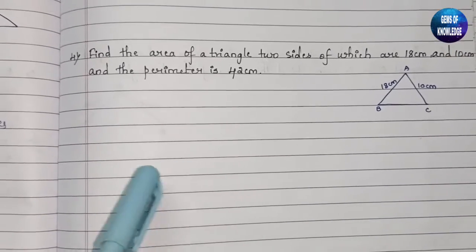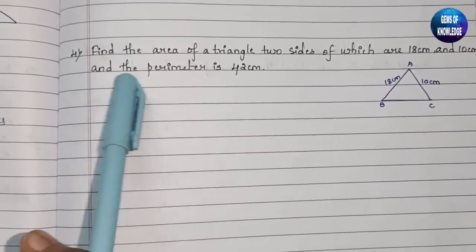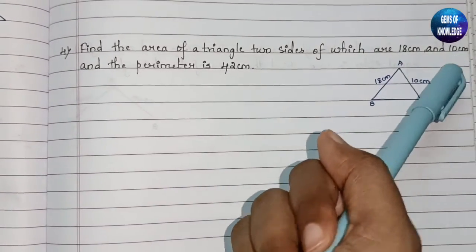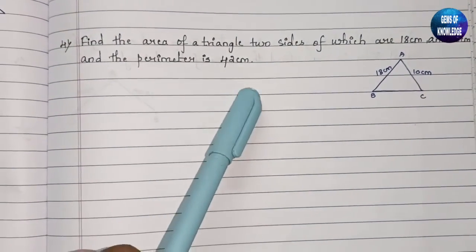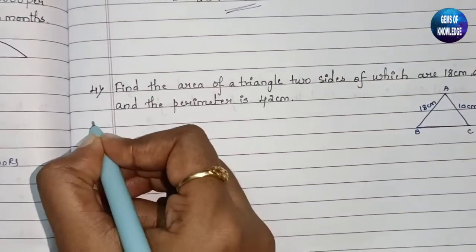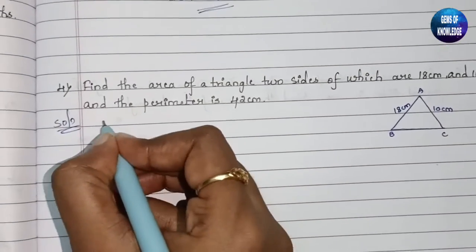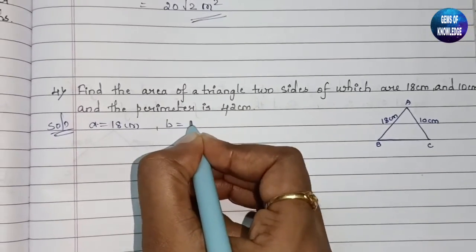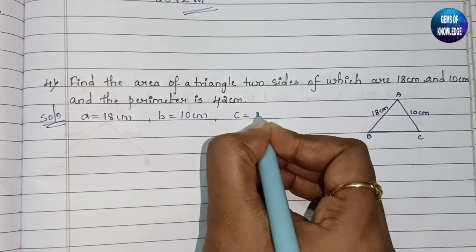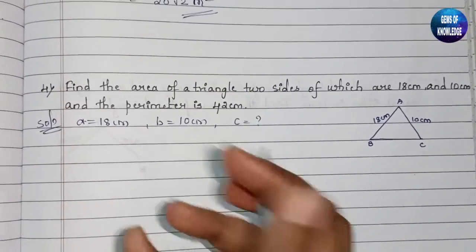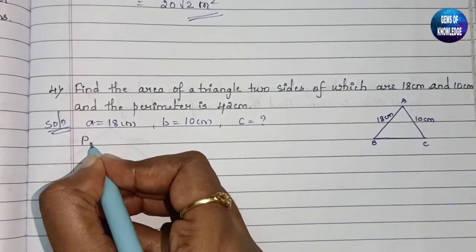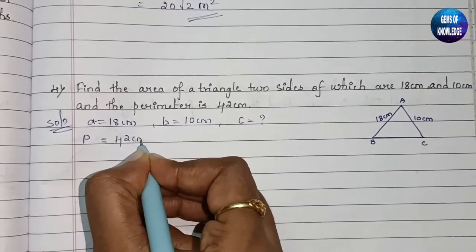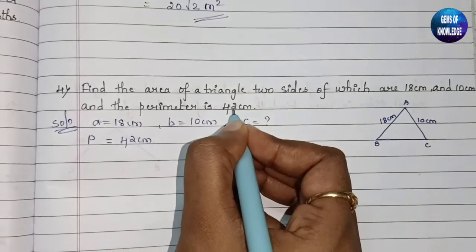The fourth question is: find the area of the triangle, two sides of which are 18 centimeter and 10 centimeter, and the perimeter is 42 centimeter. Here they have given only two sides — a equals 18 centimeter and b equals 10 centimeter — and c is unknown, but they have given us the perimeter, which is 42 centimeter.